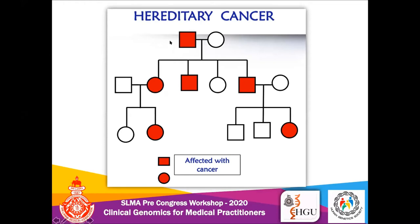The final pedigree is the one you typically see for inherited or hereditary cancer. There are several generations with multiple affected individuals. Usually you have an affected parent and affected children — there's typically an autosomal dominant pattern of transmission for most hereditary cancers, though autosomal recessively inherited cancers also exist.